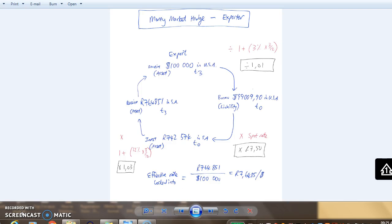We export goods to the value of $100,000 US dollars and will receive this from our US customer in three months time. Even though it's an inflow of cash, we're still exposed to fluctuations in the exchange rate.